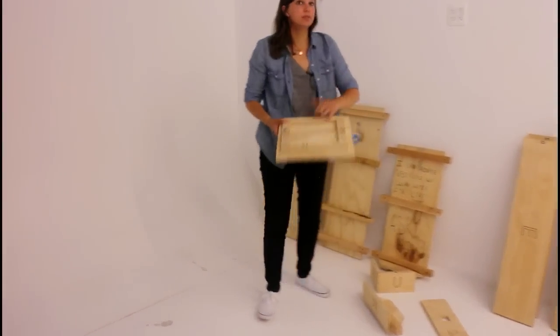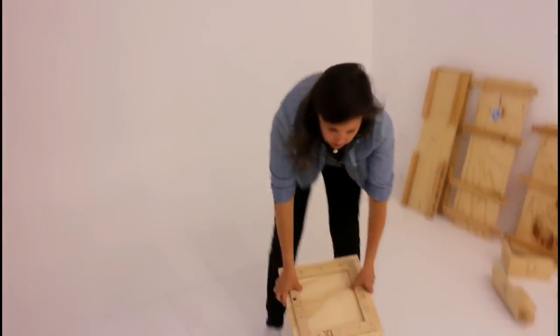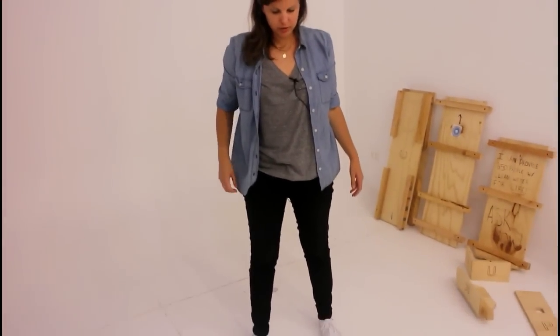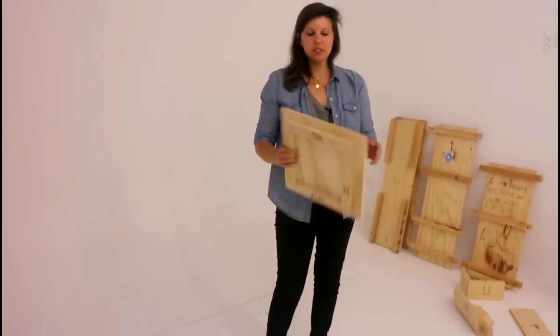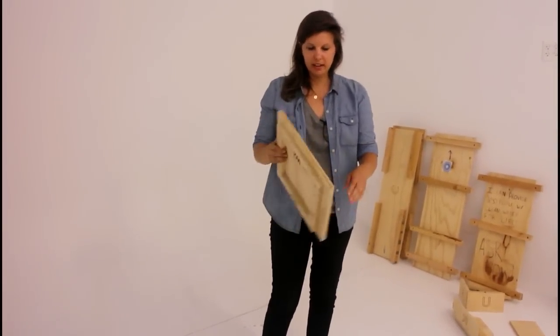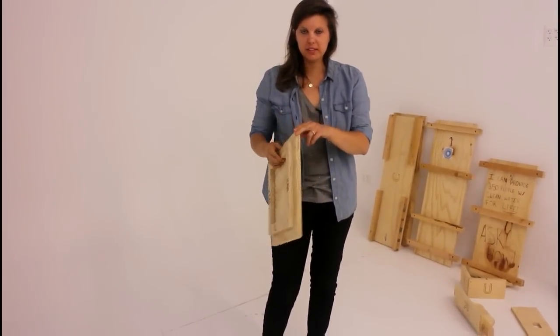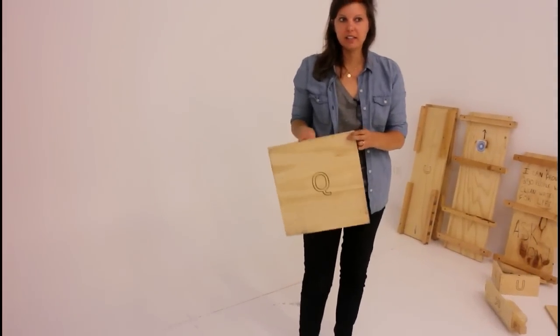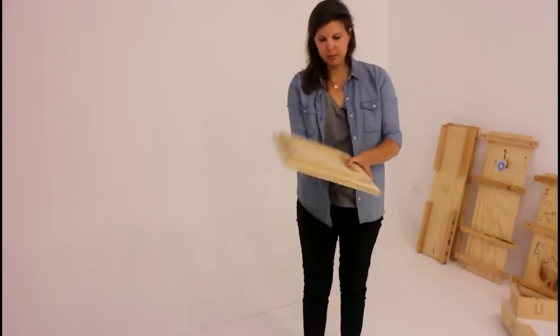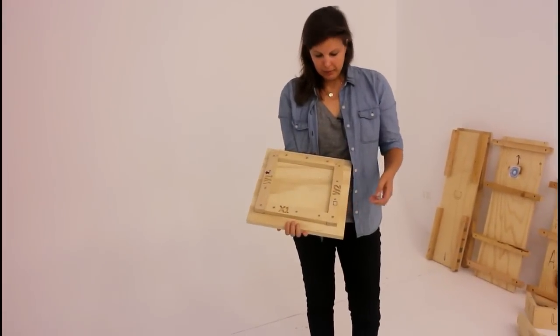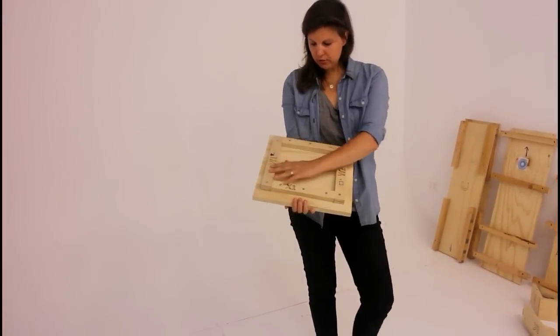This is the base. This goes on the ground when you're assembling the mold to pour a filter. Something that is different than some other biosand filters is this is not square. This is actually 35 centimeters by 36 centimeters. So it's not a perfect square and your filter will also not be a perfect square. So it's a little bit different than if you were using the steel mold.